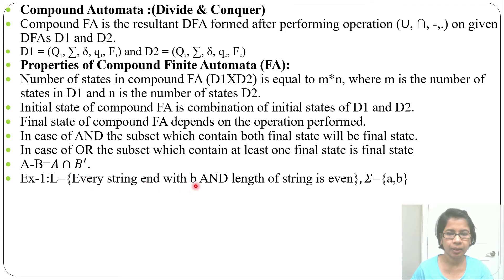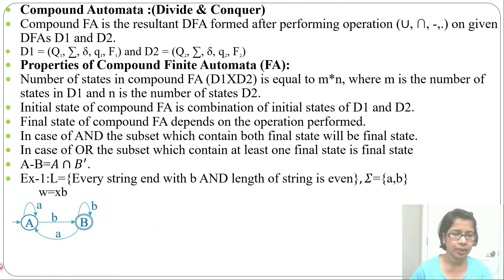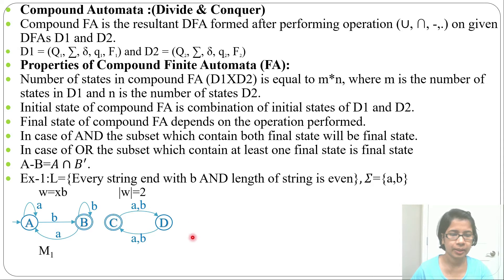Let's do one example: every string ends with b AND the length of the string is even, with alphabet {a, b}. First we'll design the DFA for every string ending with b, then for even-length strings, and then combine the two automata. The DFA for ending with b has two states, and the DFA for even-length strings is also shown.